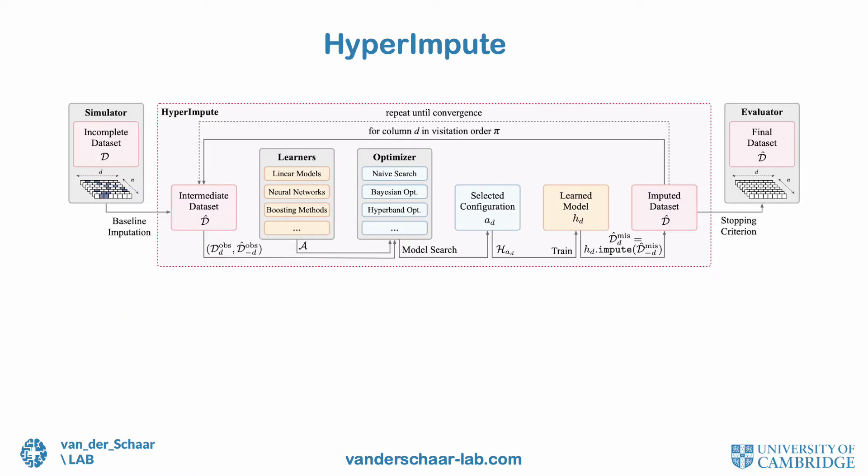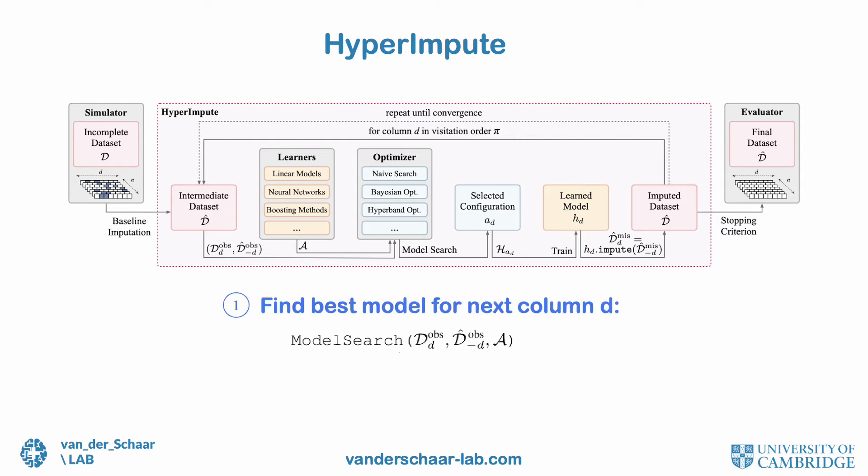And that is exactly what we set out to address. We aim to provide a useful tool for practitioners which automatically works well in any scenario. We introduce HyperImpute, an algorithm that iteratively imputes each column by automatically selecting the best imputation model and hyperparameter configurations for that column.